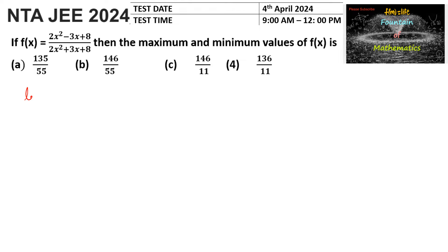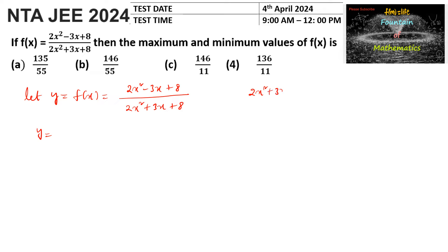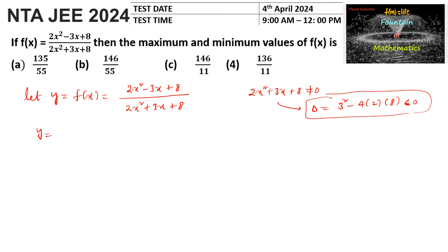Let y = f(x) = (2x² - 3x + 8) / (2x² + 3x + 8). First, note that the denominator 2x² + 3x + 8 is never equal to 0, since its discriminant delta = b² - 4ac = 3² - 4(2)(8) is negative, meaning the denominator is always positive.